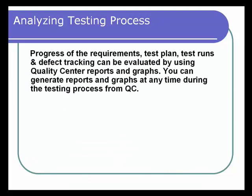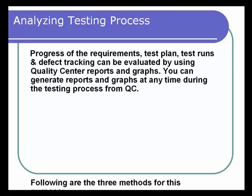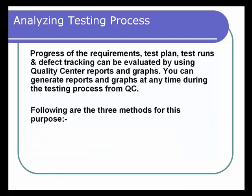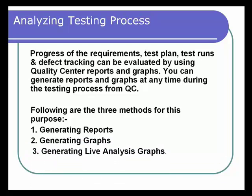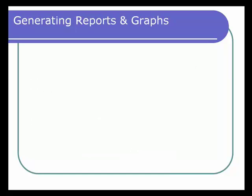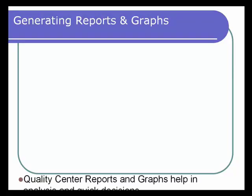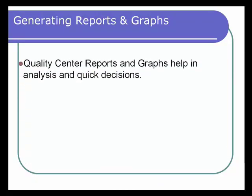Let's look at the features provided by Quality Center for analyzing testing process progress of requirements, test plan, and test runs. Effect tracking can be evaluated by using Quality Center reports and graphs. You can generate reports and graphs at any time during the testing process. There are three methods for this purpose: generating reports, generating graphs, and generating live analysis graphs.